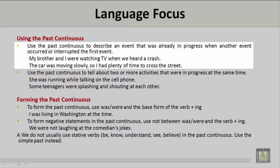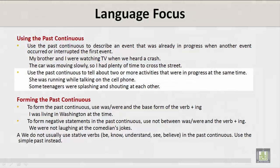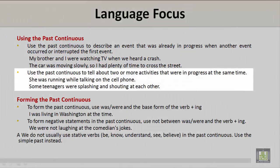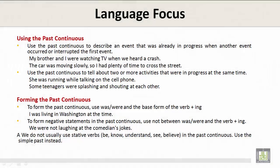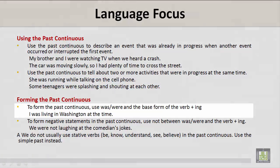The car was moving slowly, so I had plenty of time to cross the street. Use the past continuous to tell about two or more activities that were in progress at the same time. For example: 'She was running while talking on the cell phone.' 'Some teenagers were splashing and shouting at each other.'